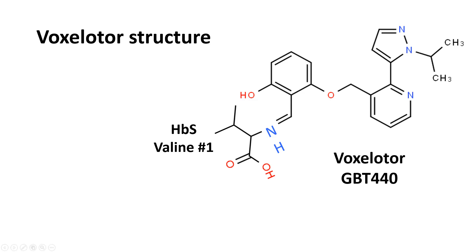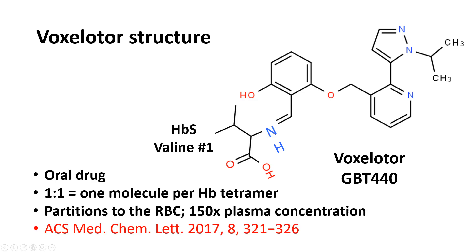Voxelotor is an oral drug that reacts one-to-one — one molecule per hemoglobin tetramer. It partitions very well between the red blood cell and the plasma, so the concentration inside the red blood cell is 150 times that in the plasma. This drug is targeted specifically to the red blood cells, which means the efficacy is much better.